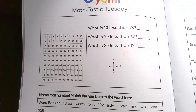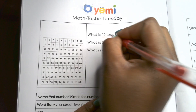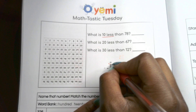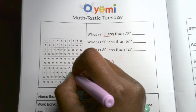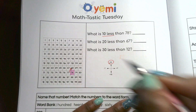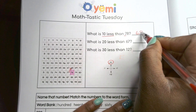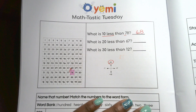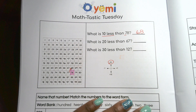I'm going to show us how to use the hundreds chart, but if you don't need it you can also do this mentally — we're just trying to practice how to manipulate numbers. So, 10 less than 78: I highlight 78 on the hundreds chart. 10 less means going up one row. Looking at the tens place, I go from 70 to 60, and my ones place stays the same. 10 less than 78 is 68.